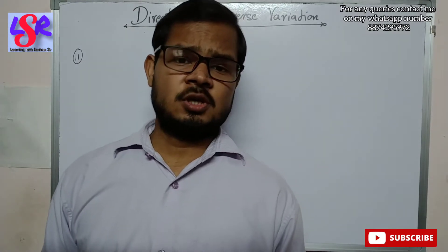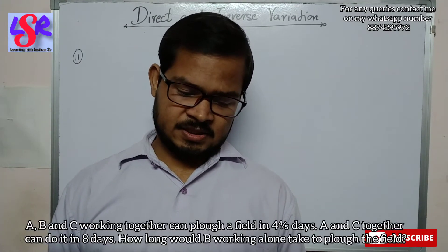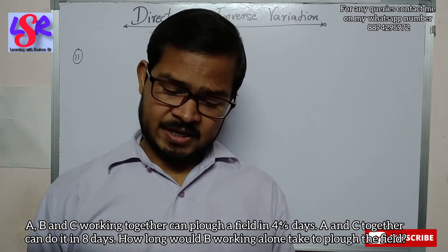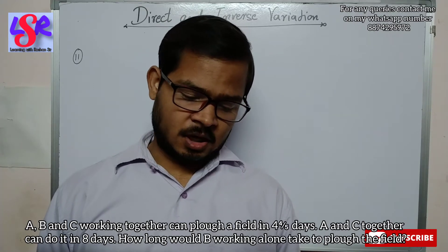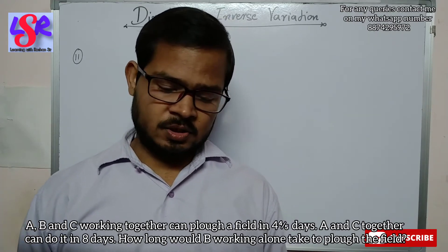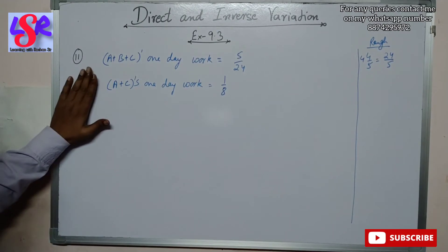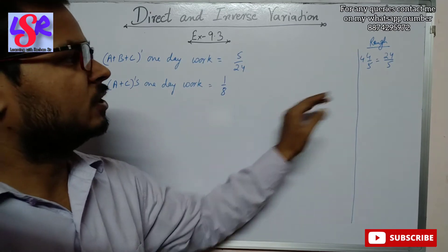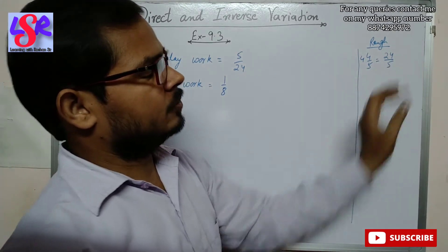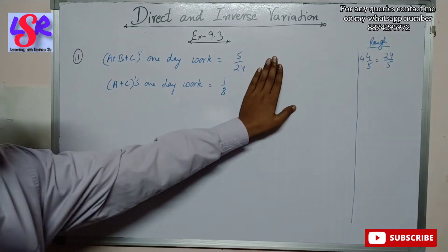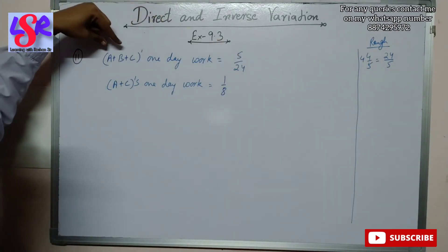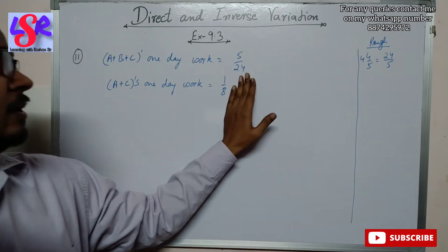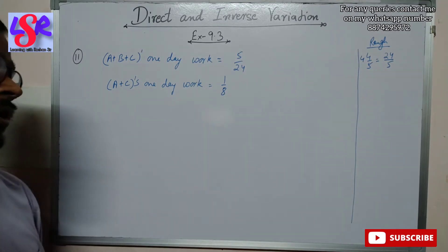Now question number 11. A, B and C working together can plow a field in 4 and 4 upon 5 days. A and C together can do it in 8 days. How long would B working alone take to plow the field? A plus B plus C's one day work is 5 upon 24, obtained by taking the reciprocal of 24 upon 5. A and C together complete 1 upon 8 of the work in a single day.